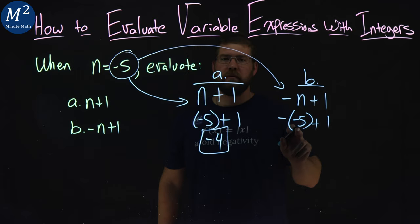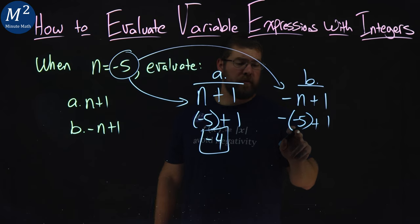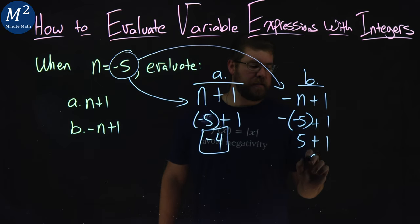Two negatives make a positive, but not like two wrongs make a right. But two negatives do make a positive when you multiply. Negative times a negative is a positive. Positive 5 plus 1. 5 plus 1 is 6.